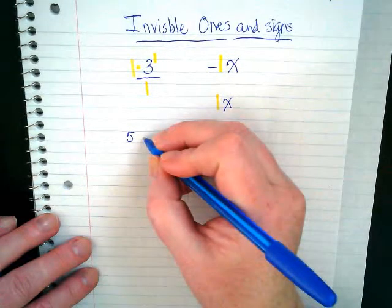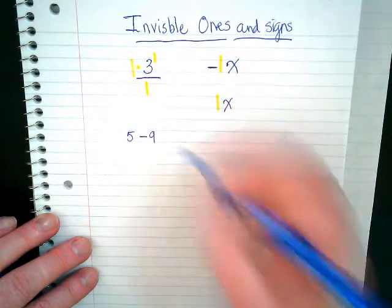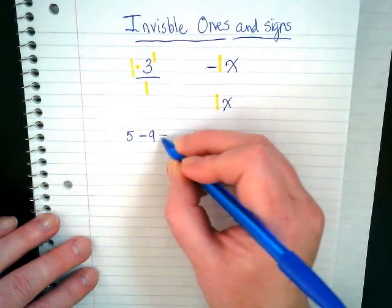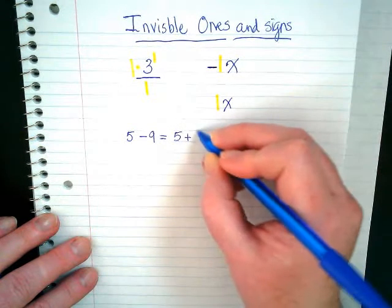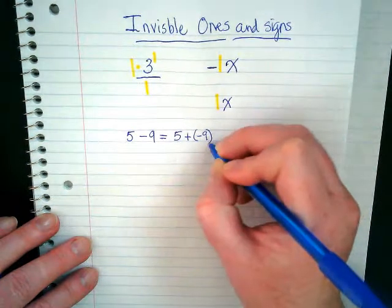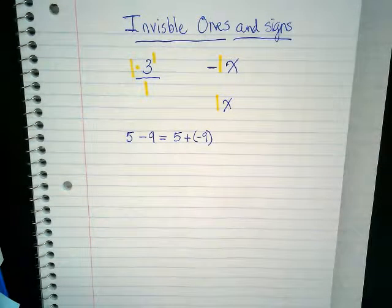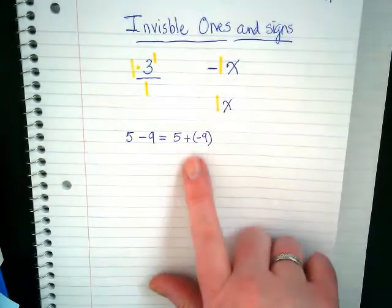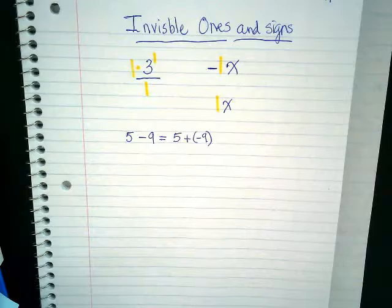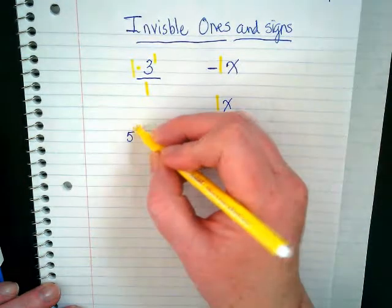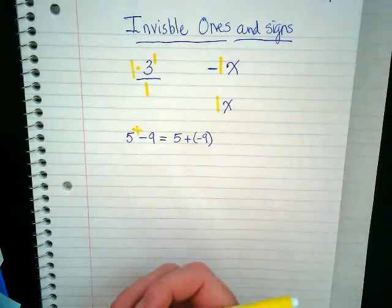If I write five minus nine, that's the same as if I was going to say five plus negative nine. Do you guys see what I mean by shortcuts? This took a lot more writing didn't it? I had to add the parentheses and I had to add the plus sign. When we're putting five and negative nine together, remember plus just means and in math.